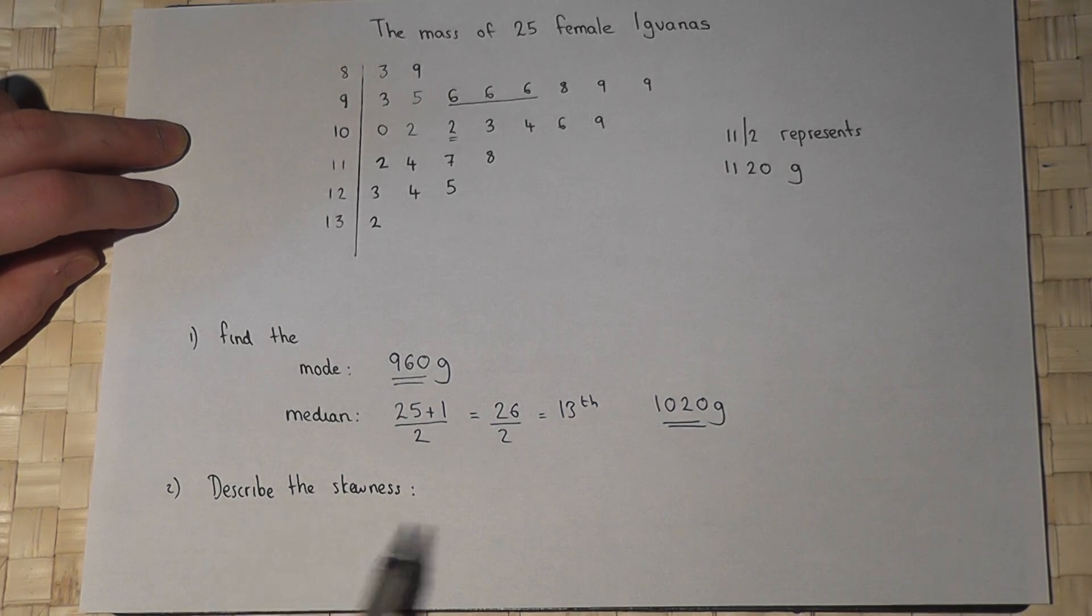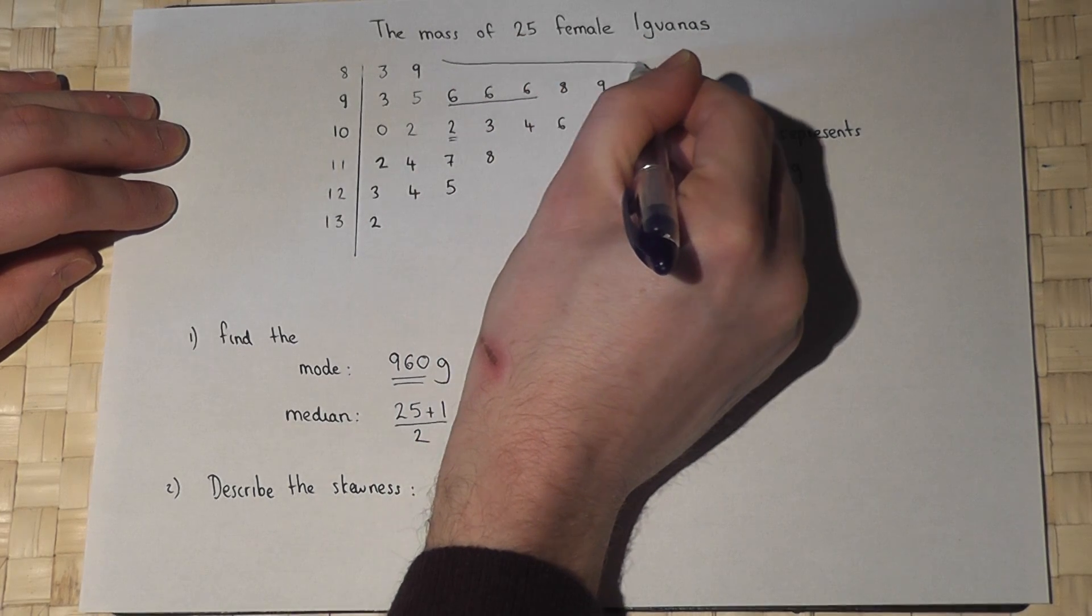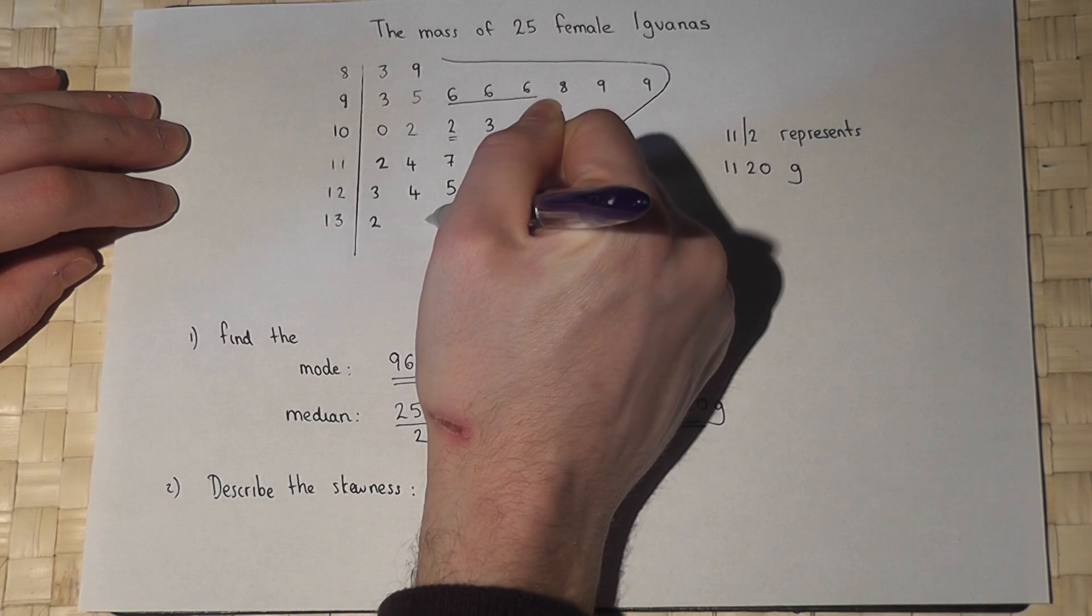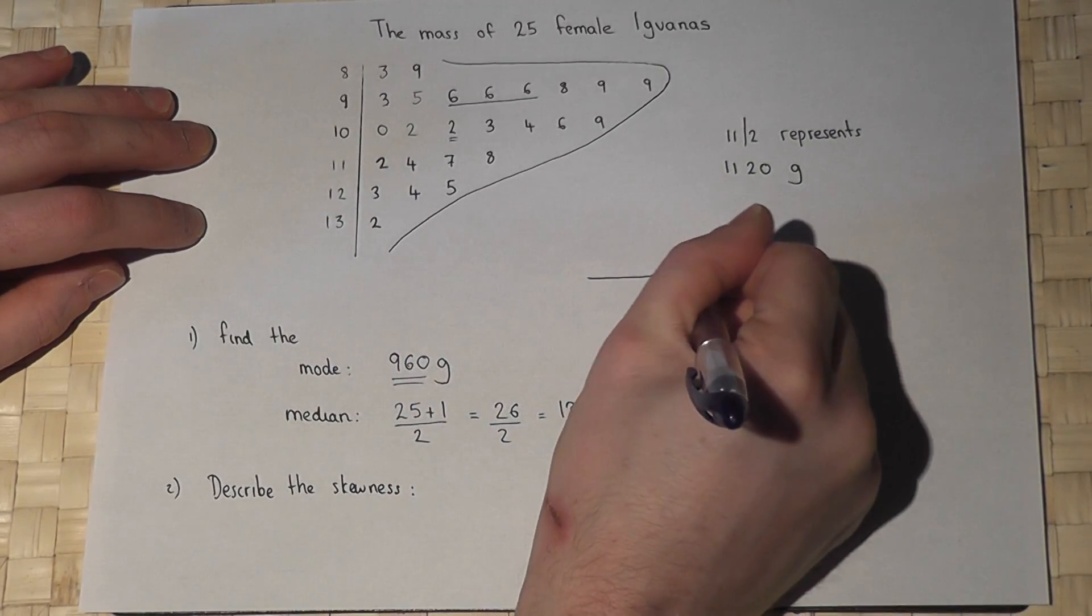Now the skewness describes the shape of the graph. This shape has got this big peak early on, then it tails off to the right. Now there are two forms of skew.